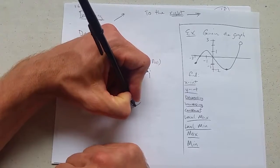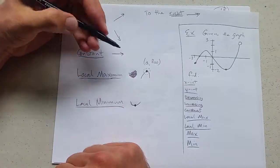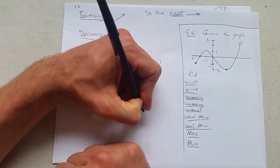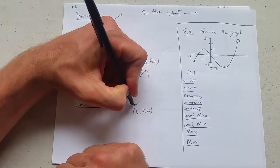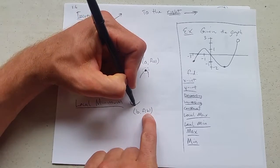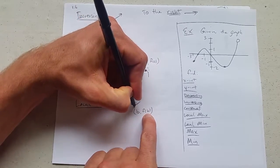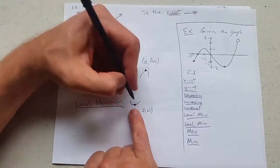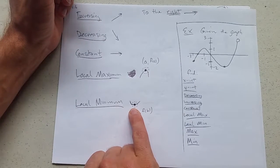Same thing. Local minimum is very similar. If this is b comma f of b, what that means, this y value is the smallest one for all the other points close to this point. Now why do I say close?